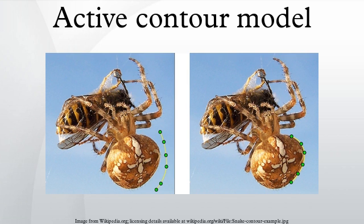Rather, they depend on other mechanisms such as interaction with a user, interaction with some higher level image understanding process, or information from image data adjacent in time or space. In computer vision, contour models describe the boundaries of shapes in an image. Snakes in particular are designed to solve problems where the approximate shape of the boundary is known. By being a deformable model, snakes can adapt to differences in noise and stereo matching and motion tracking. Additionally, the method can find illusory contours in the image by ignoring missing boundary information.